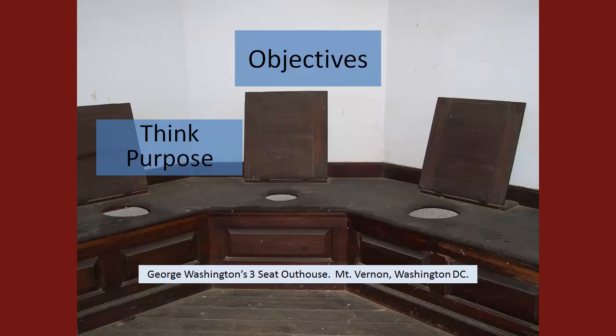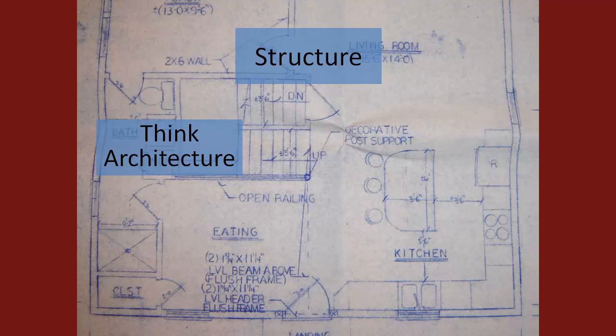Then we start getting into the things people would normally think about when talking about web design — talking about structure. Structure takes on a number of different caveats. There's the structure of the website itself: how are the directories going to be laid out, how are you going to store your scripts, how are you going to store the different things that make up that website? That is the external structure of the website — nobody ever sees that unless they're looking behind the scenes. If we're thinking from an architectural standpoint, you might think of the neighborhood layout, having a cul-de-sac with four houses — that's the structure that content sits upon.